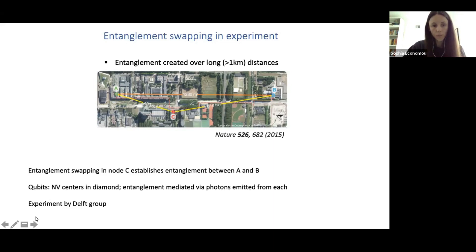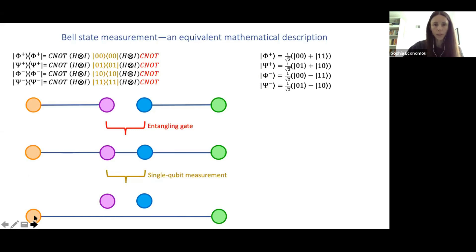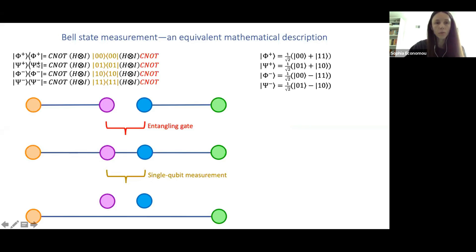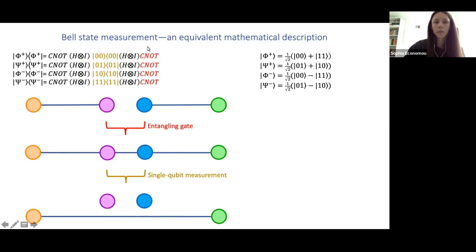Even though the orange and green qubits have never physically interacted directly, they become entangled through the entanglement they shared before the measurement with two different qubits, and the joint Bell measurement. This was demonstrated experimentally at Delft in Ron Hansen's group, where they demonstrated entanglement swapping and the creation of entanglement between two NV centers — one in lab A and one in lab B — separated by more than a kilometer. Photons sent from each lab were measured in a Bell basis, and A and B, which never interacted, became entangled.